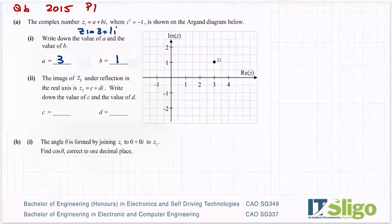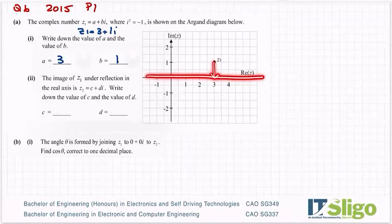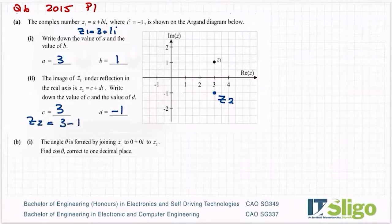The image of z1 under reflection in the real axis is z2 equal to c plus di. Write down the value of c and the value of d. So it's a reflection - it's like the real axis is a mirror. You see how far is it from there to the real axis and I come down the same distance the other side. So that is z2 down there. The real part is going to stay the same - c is still going to be 3 but the imaginary part changes to minus 1. So z2 then is 3 minus 1i.